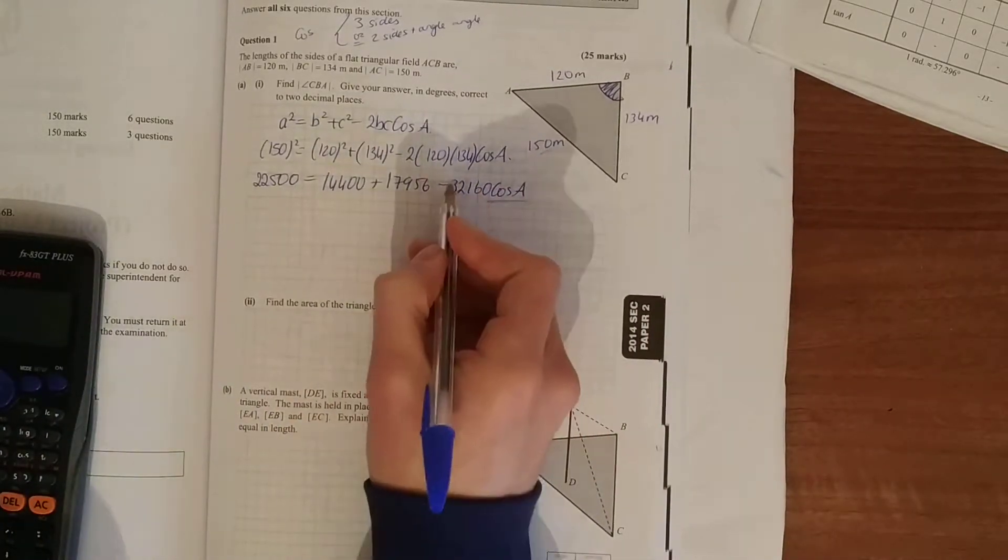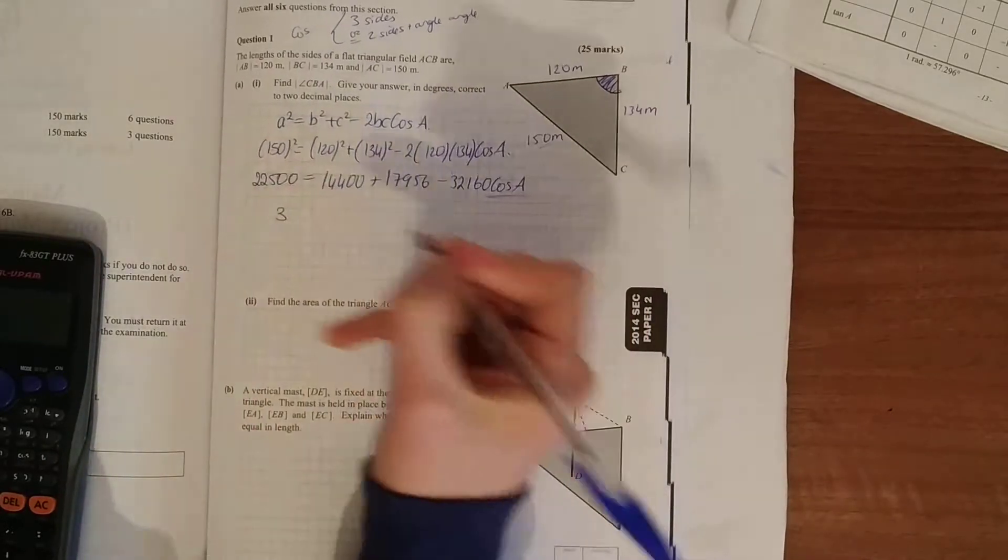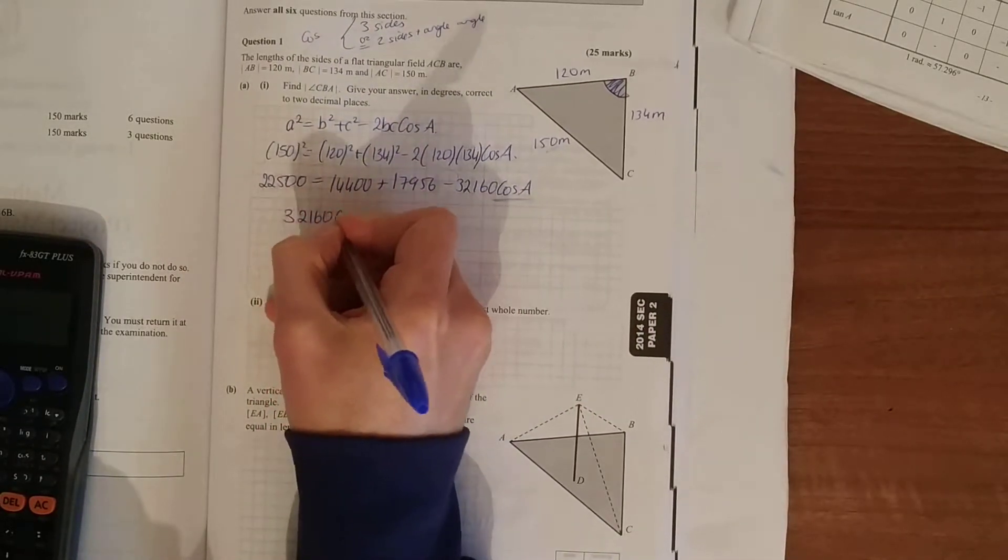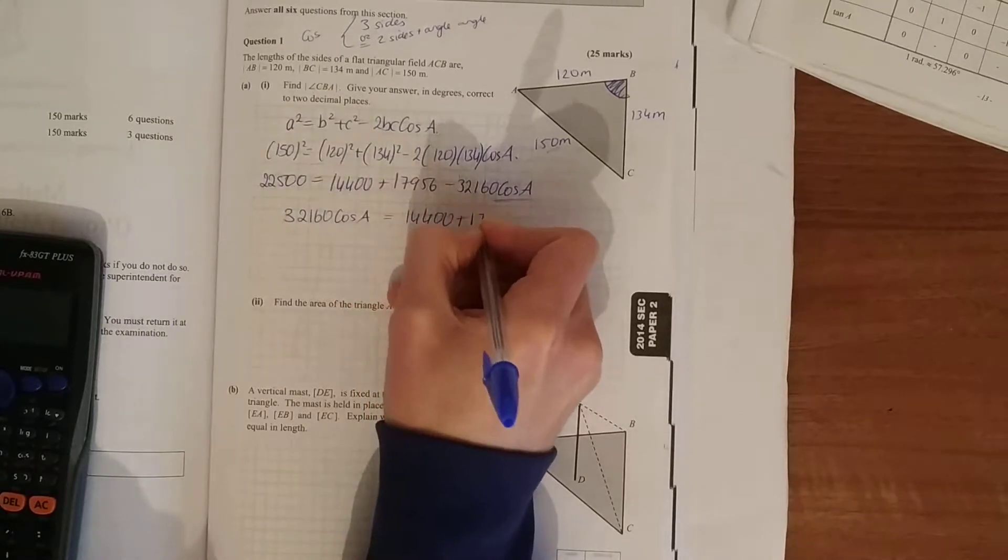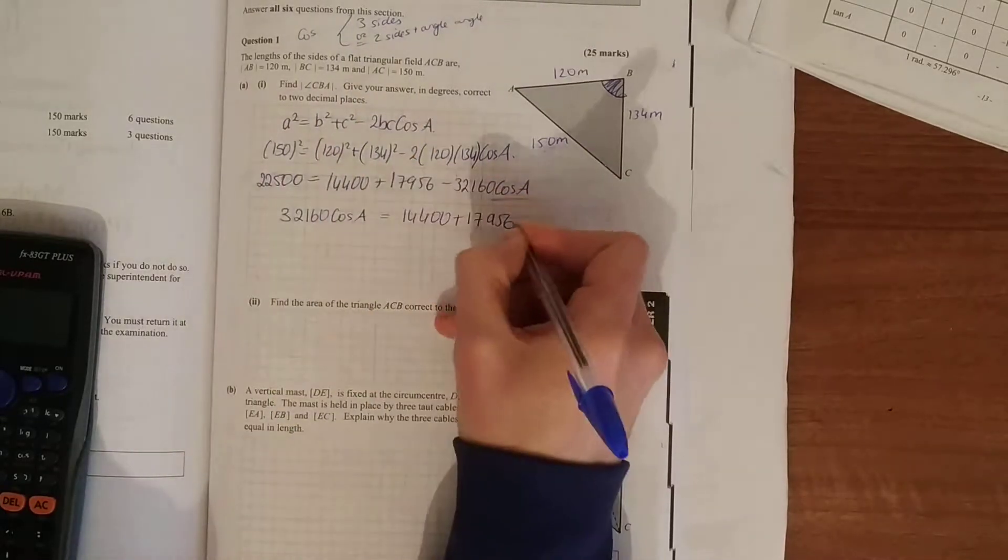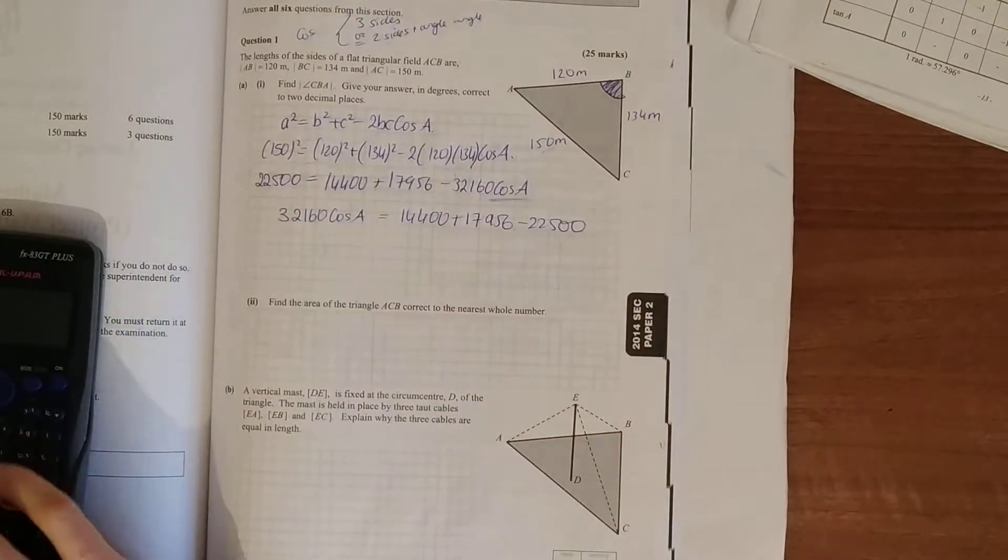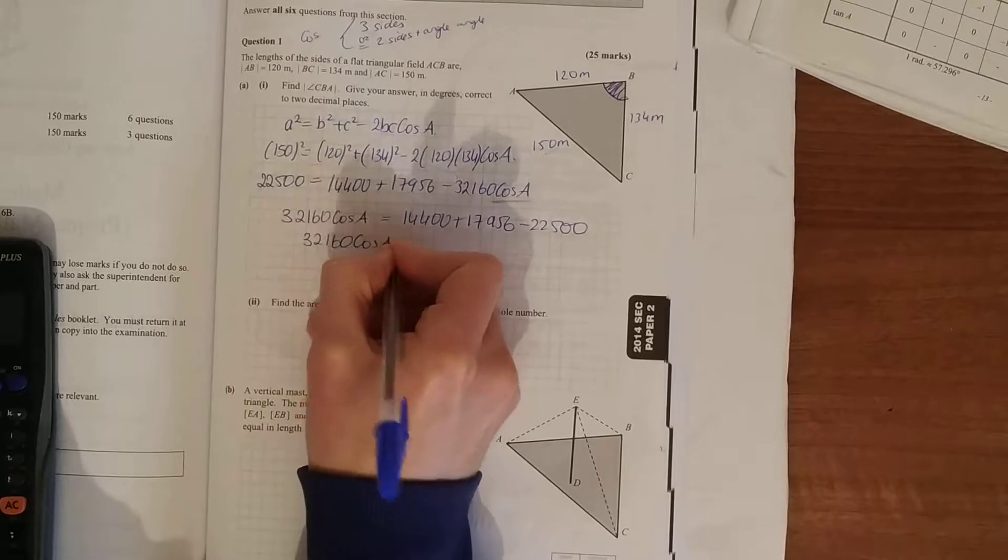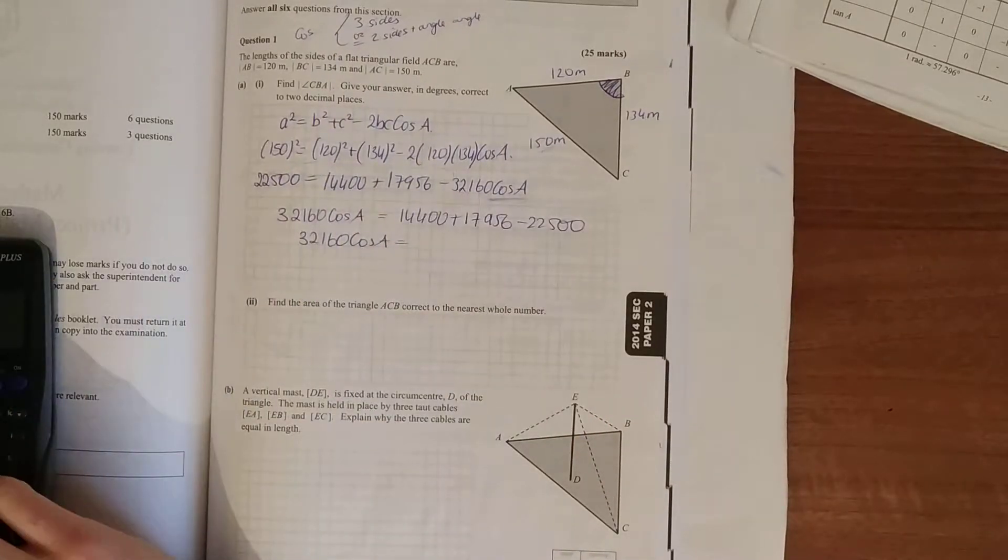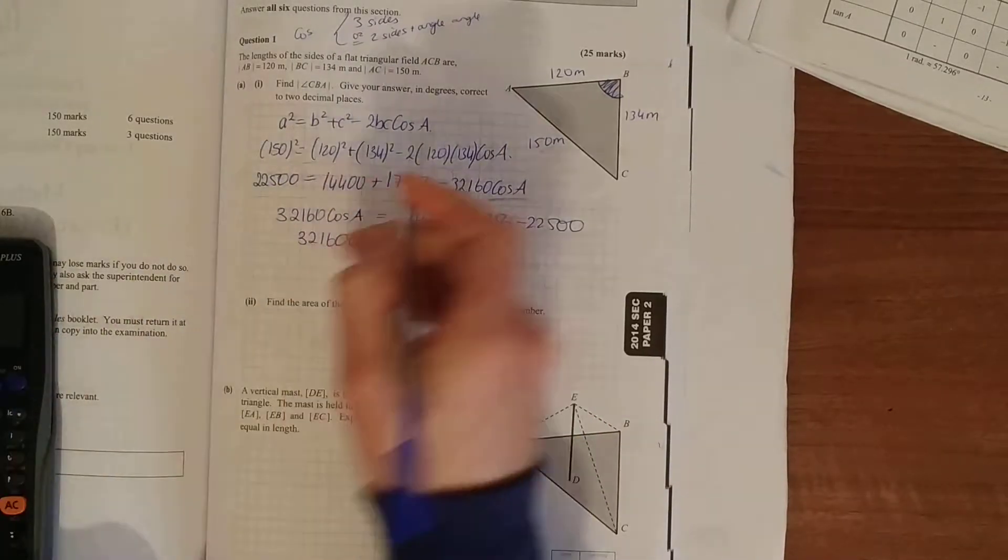Let's change that over to one side. So 32,160 cos A is equal to 14,400 plus 17,956 minus 22,500. And you work that all out, you get 32,160 cos A is equal to 9,856.